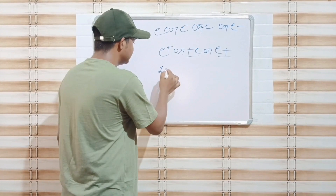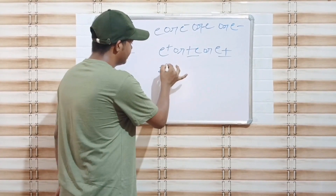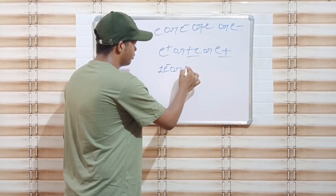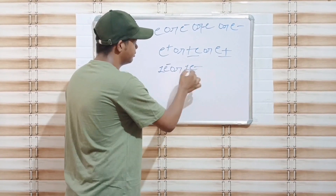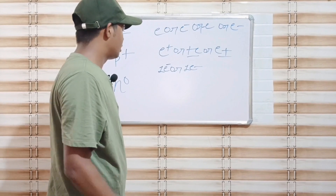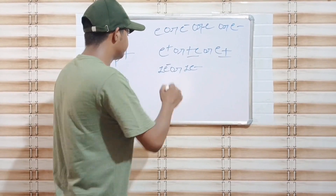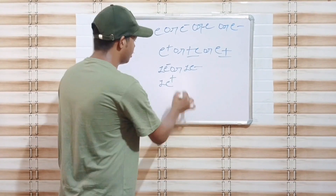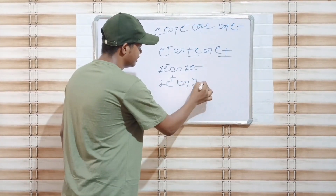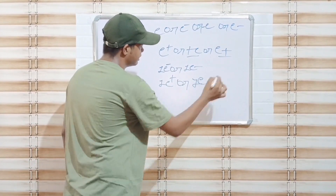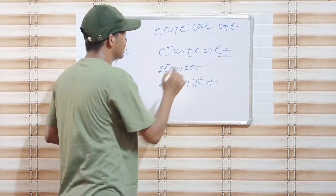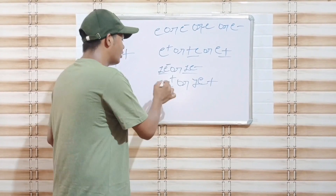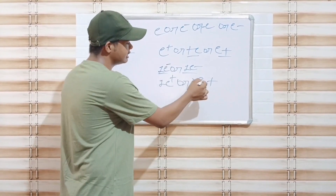Electron have one e negative charge. Proton have one e positive charge. Electron mein one e negative charge hota hai, aur proton mein one e positive charge hota hai.